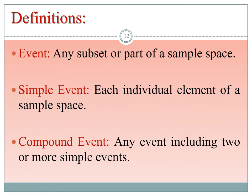The next definition is event: any subset or part of the sample space. Events can be divided into simple events and compound events. A simple event is each individual element of a sample space. A compound event includes two or more simple events.